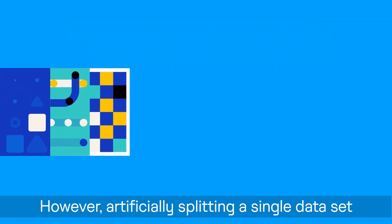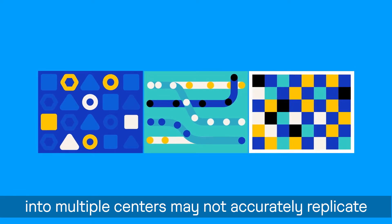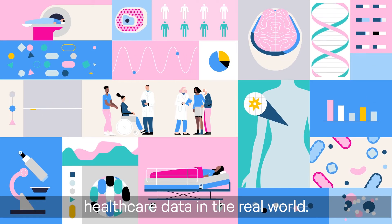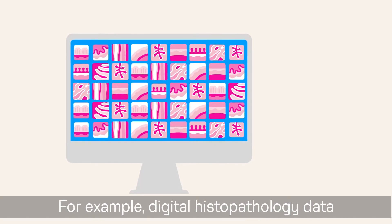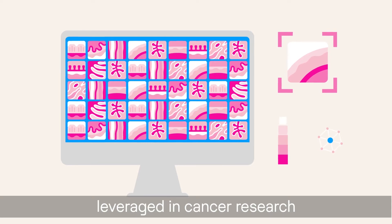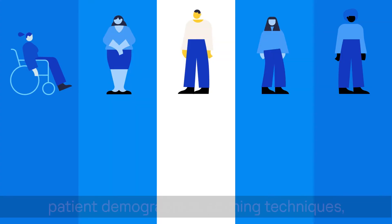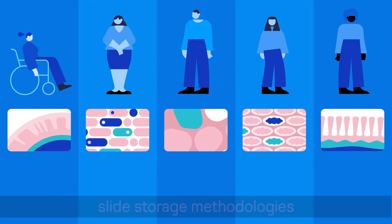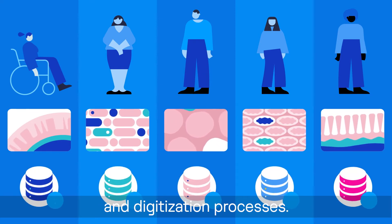However, artificially splitting a single dataset into multiple centres may not accurately replicate healthcare data in the real world. For example, digital histopathology data, leveraged in cancer research, differs widely according to the hospital's patient demographics, staining techniques, slide storage methodologies, and digitization processes.